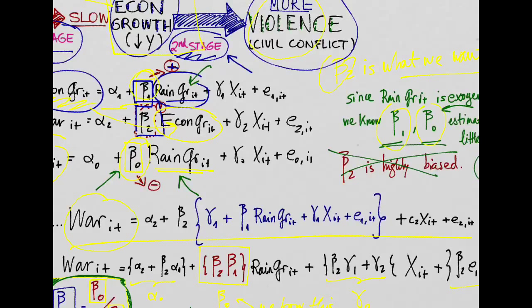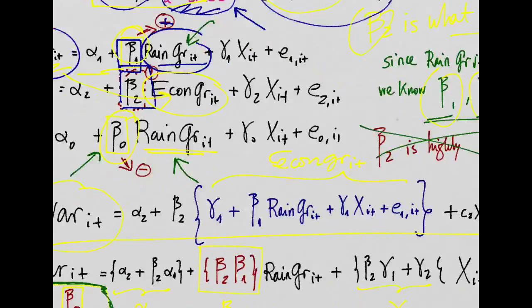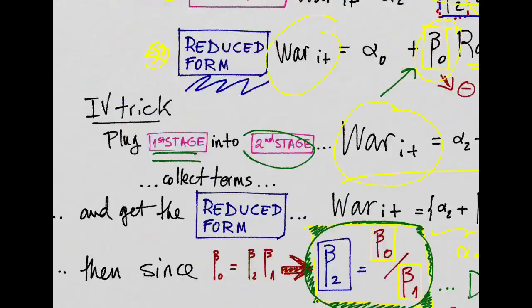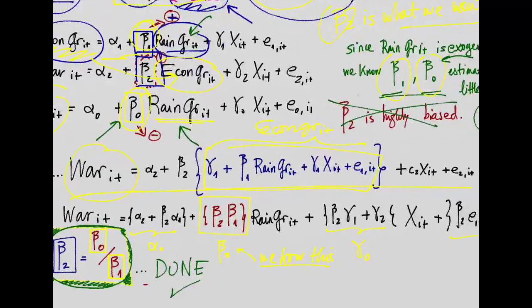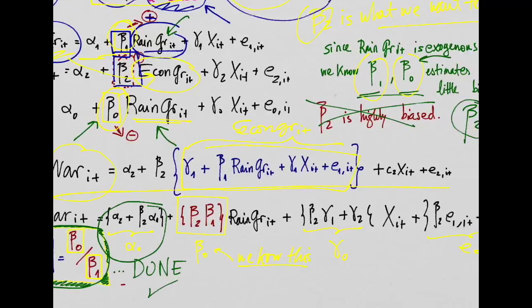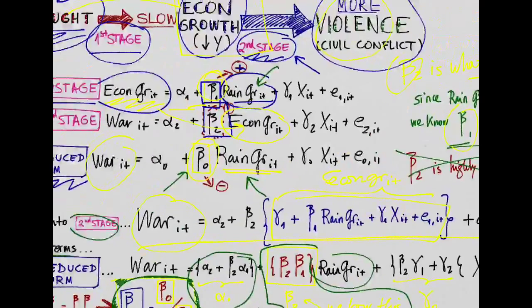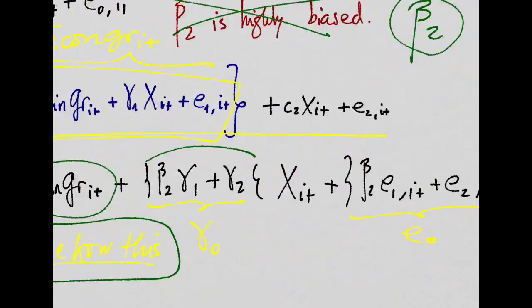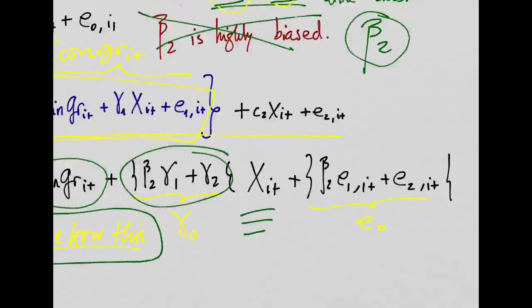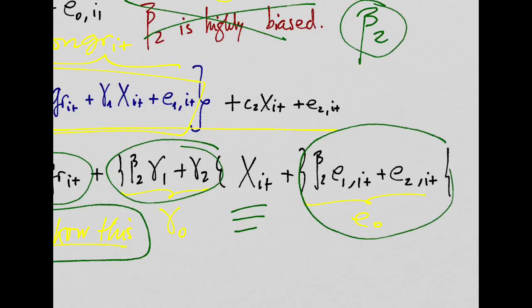And that is this war regressed on economic growth. And basically now what we do is collect terms and get something that looks really similar to our reduced form. Basically just isolate a constant and then isolate a coefficient that's multiplying rainfall growth, such as the case of the reduced form here. And then something that is coefficient for the other controls, the other variables, and then something that is basically the error term.